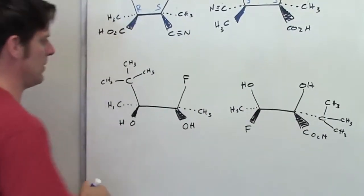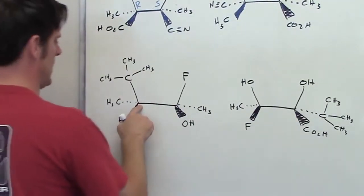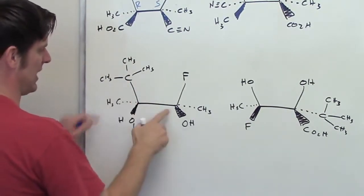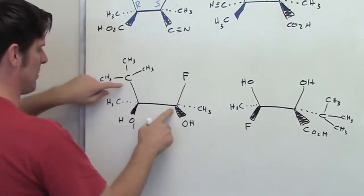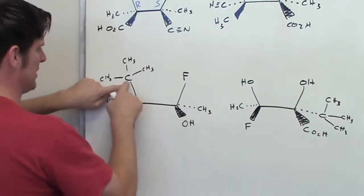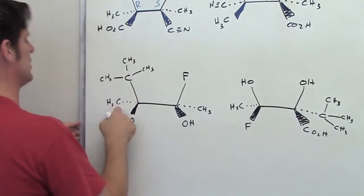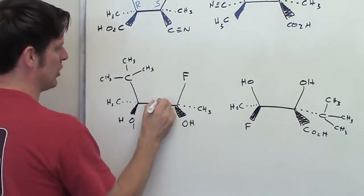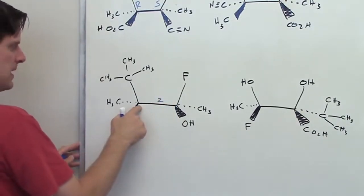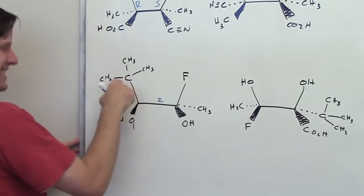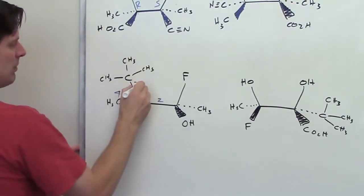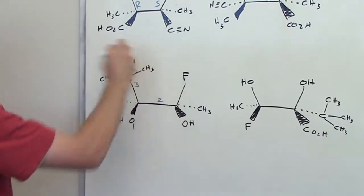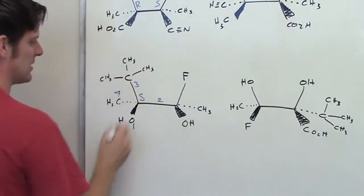Let's do the same thing for these molecules down here. I've got this stereocenter bound to an oxygen, carbon, carbon, carbon. Oxygen wins. All carbons tie, so I go out to break the tie. This carbon is bound to fluorine, this carbon is bound to three carbons, and this carbon is bound to hydrogen. Fluorine wins, which means this entire branch is priority group number two. The carbon bound to hydrogens is the loser — group number four — and the t-butyl group is group number three. The loser is pointing away from us, so tracing from one to two to three is counterclockwise, which means it is an S stereocenter.